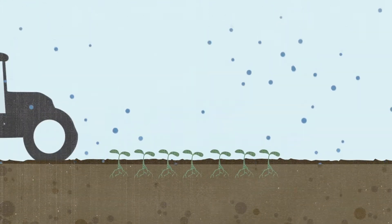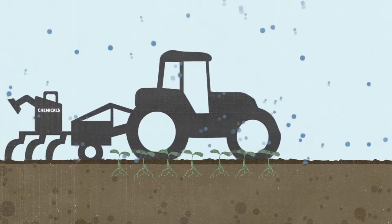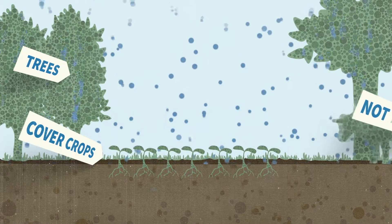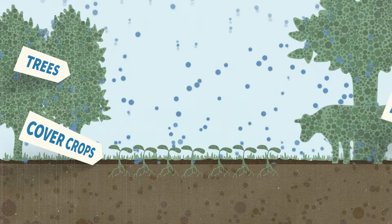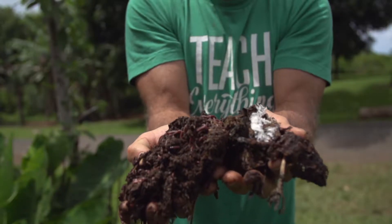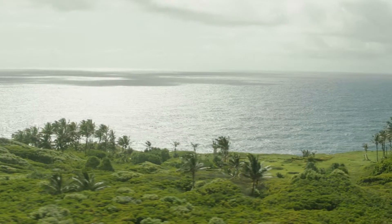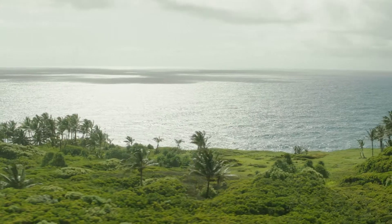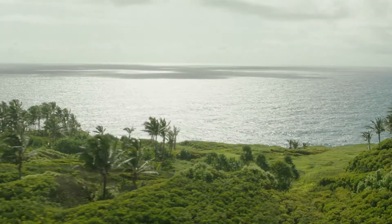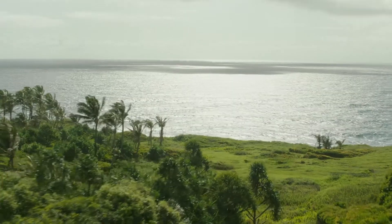Along with other regenerative practices like not tilling the soil, planting trees, cover crops, planned grazing, and nurturing mycorrhizal cultures and earthworms, we can build and retain gigatons of soil carbon. This is carbon farming. This is regenerative agriculture.